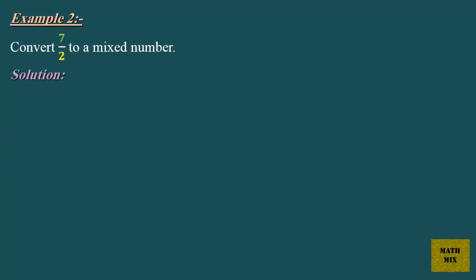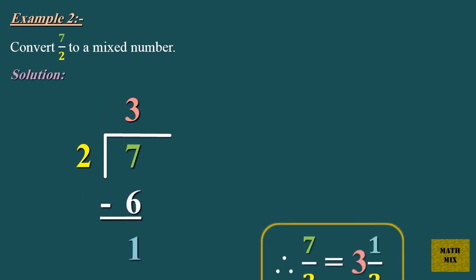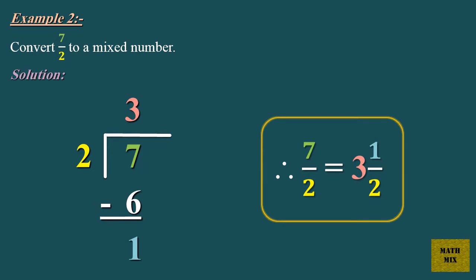Example 2: Convert 7 over 2 to a mixed number. Therefore, 7 over 2 equals 3 and 1 half.